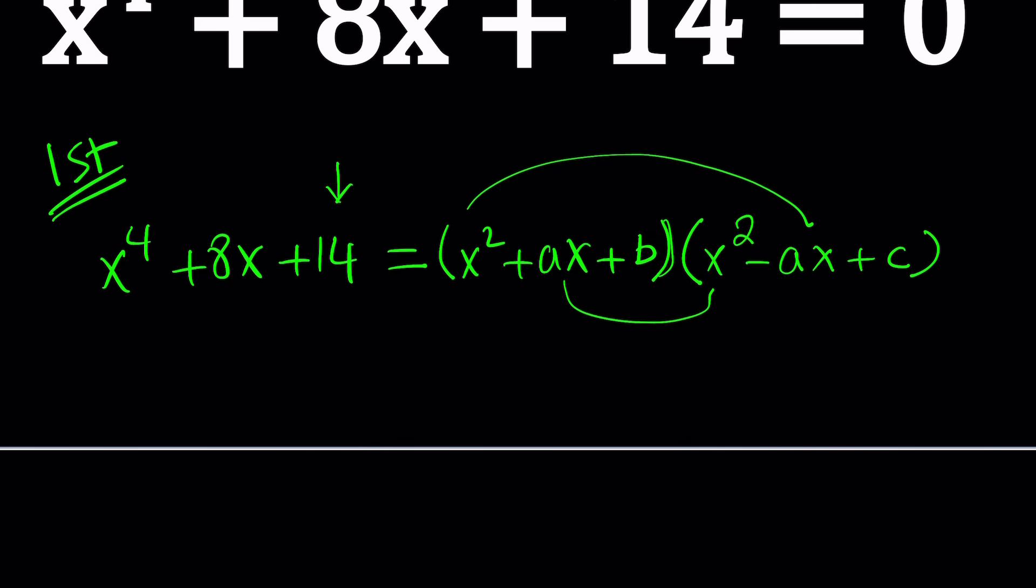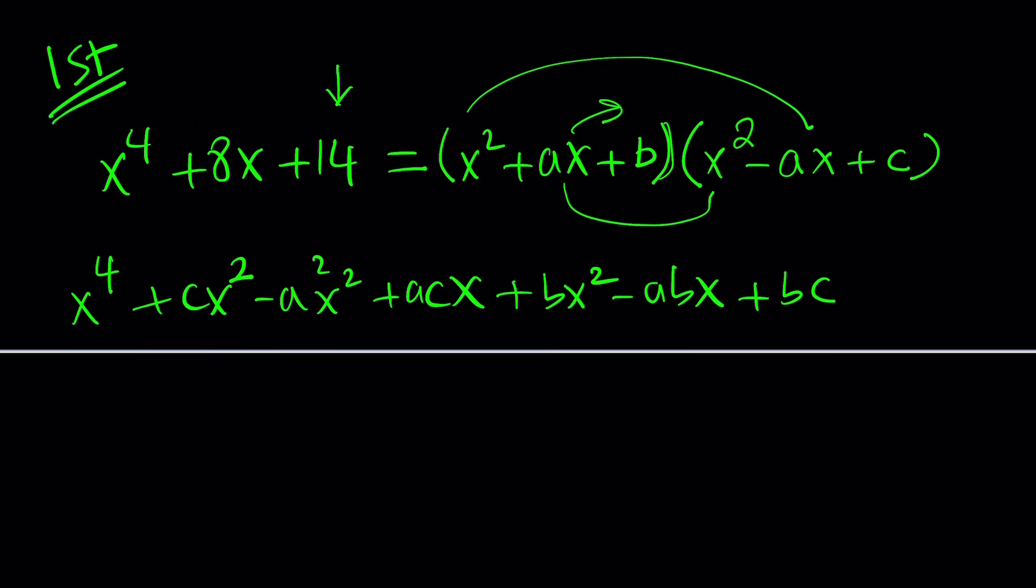Let's go ahead and expand the right hand side and just ignore x to the third power because you know that's going to cancel out. We're going to get x to the fourth power minus ax cubed plus ax cubed that are going to cancel out. And then we're going to have cx squared. And then I'm going to distribute this: minus a squared x squared and then plus acx. And then finally, the constant term plus bx squared minus abx plus bc.